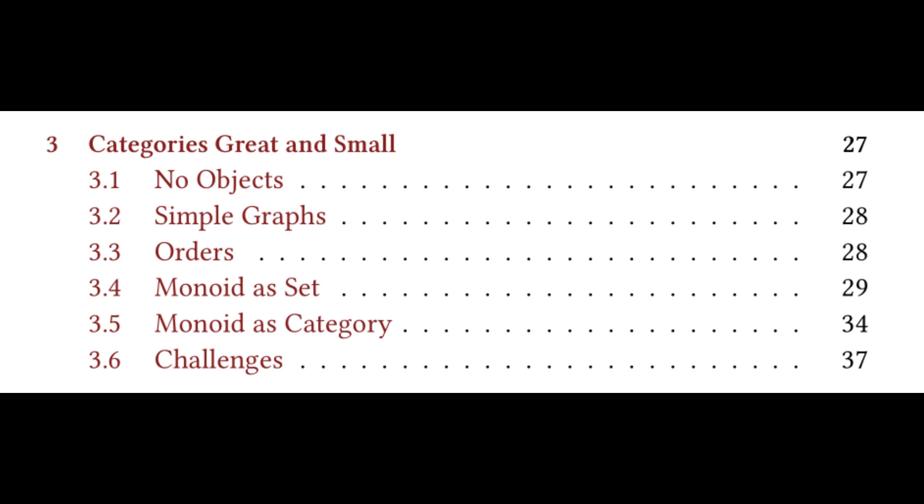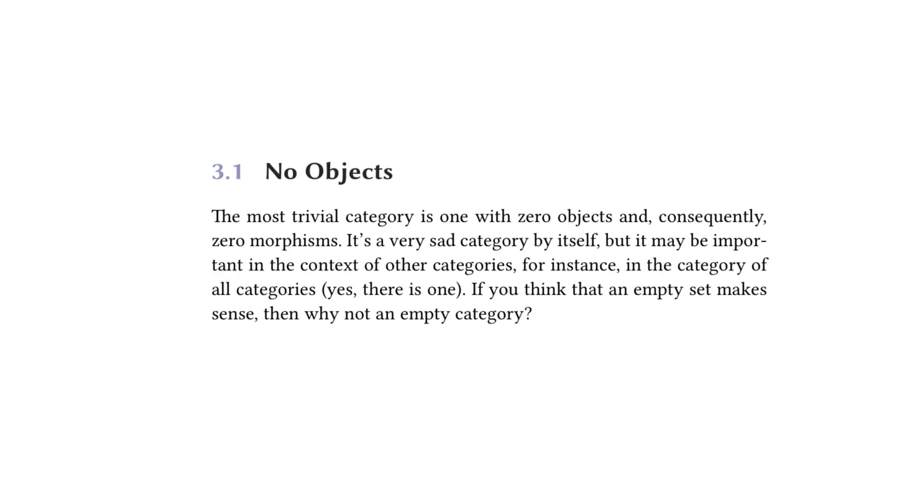This chapter has five subsections plus the challenges section at the end, and each of the subsections focuses on a category. So we're going to primarily focus on 3.1, 3.2, and then the monoid sections. Starting off with 3.1, no objects, this is the entire subsection.